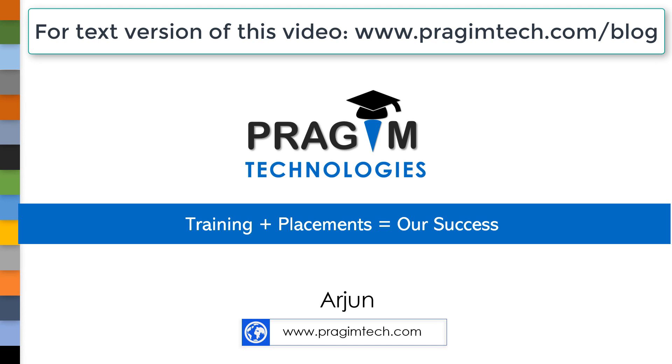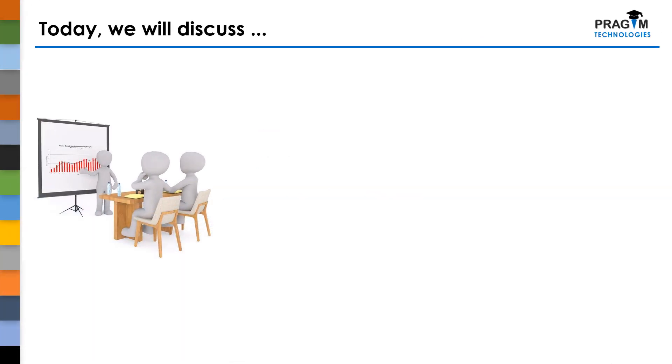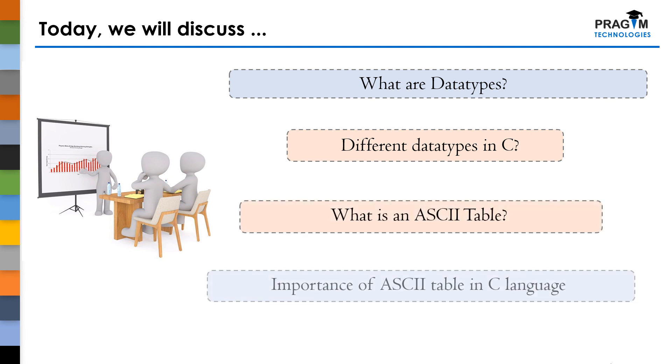This is part 14 of C tutorial series. In today's session, we will discuss what are data types and what are the different data types that we have in C language and what is an ASCII table and what is the importance of ASCII table in C language.